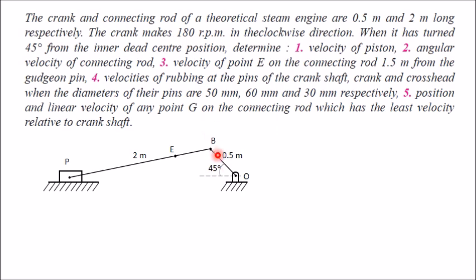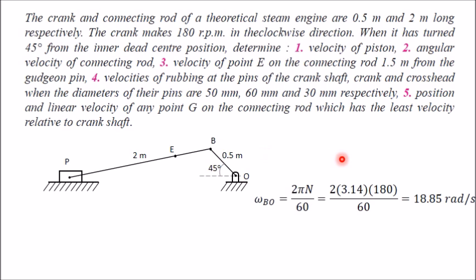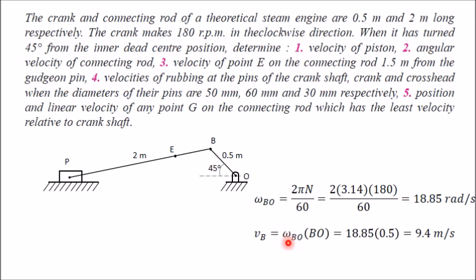The angular velocity of OB (the crank) is calculated from the given 180 rpm using ω = 2πN/60, giving 18.85 radians per second. The absolute velocity of B is then vB = ω × r, where r is the crank radius of 0.5 meters and ω is 18.85, giving a velocity of B equal to 9.4 meters per second.